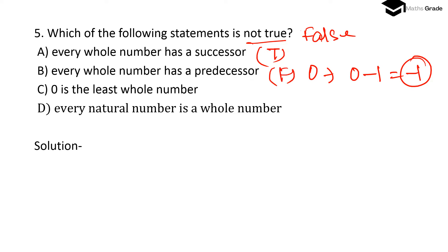Continuing question 5: Option C — 0 is the least whole number — this is true, as 0 is the smallest whole number. Option D — every natural number is a whole number — this is also true, since natural numbers 1, 2, 3, ... are all whole numbers. Therefore option B, 'every whole number has a predecessor,' is not true. This is false.